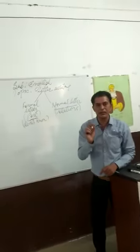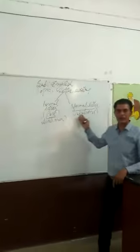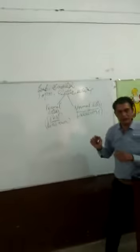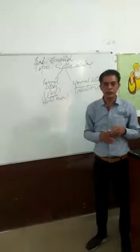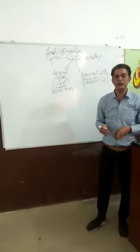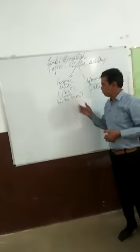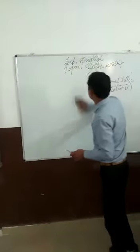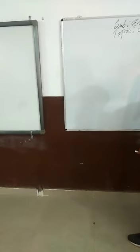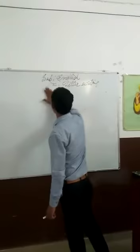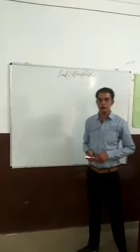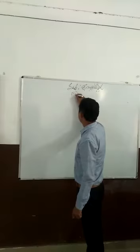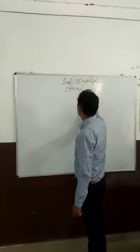I think the basic point is clear now. A formal letter is something that is written to a post, and an informal letter is written to relations like uncle, auntie, and so on. Now let's move on to the format of the letter.